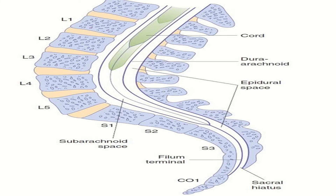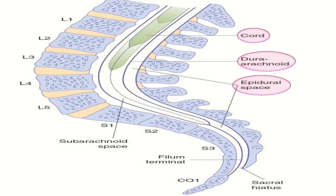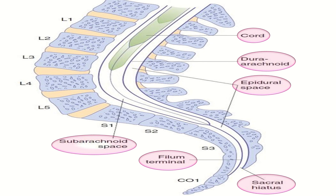It is important to understand the anatomy of the lower vertebral column and spinal cord for epidural analgesia. In the diagram, the spinal cord is at the top, with the dura and arachnoid visible. The epidural space, where the anesthetic drug is administered, is shown. The Tuohy needle is inserted at the L3-L4 or L4-L5 interspace for both spinal and epidural analgesia. Also visible are the sacral hiatus, filum terminale, and subarachnoid space.